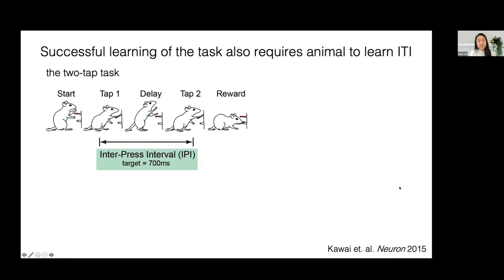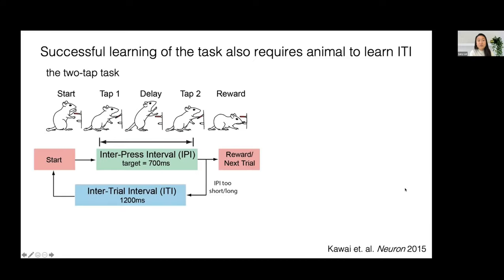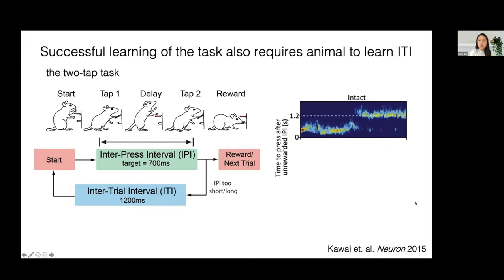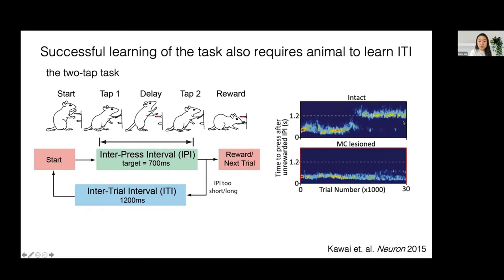The task structure isn't just this simple, because if the animal gets the IPI wrong, they're sent into a timeout period — an intertrial interval of 1200 milliseconds — before being able to initiate the next trial with another tap. Here I'm showing the intertrial interval in intact animals, and over time they eventually learn that this is a different criterion. In contrast, naive lesion animals never learn this criterion and essentially treat it as if it doesn't exist. This entire task is learned by trial and error, with no cues to tell the animal that these are distinct states.